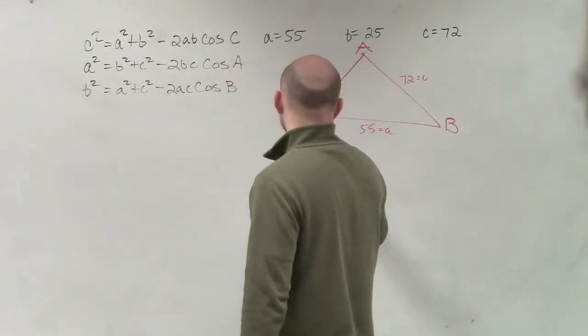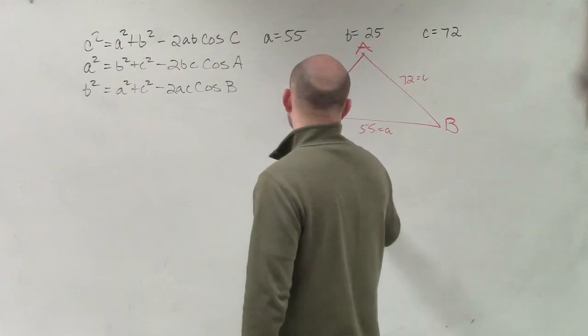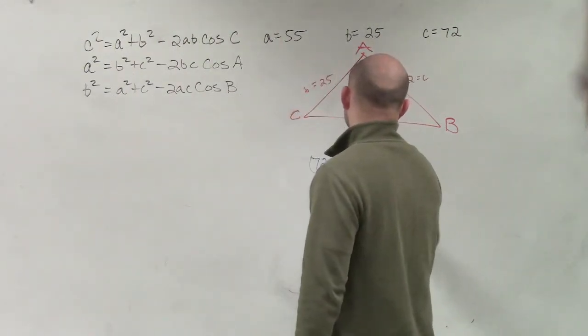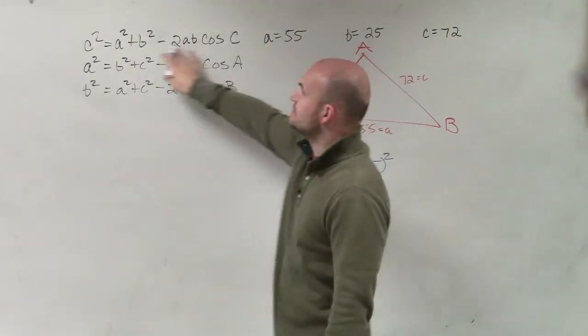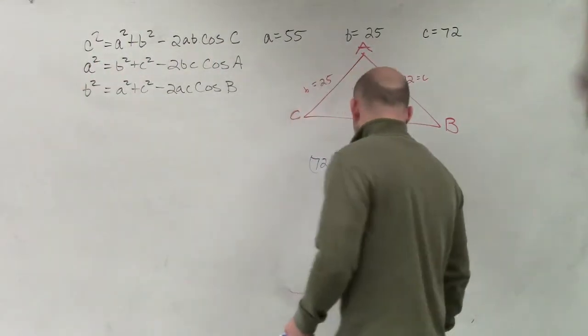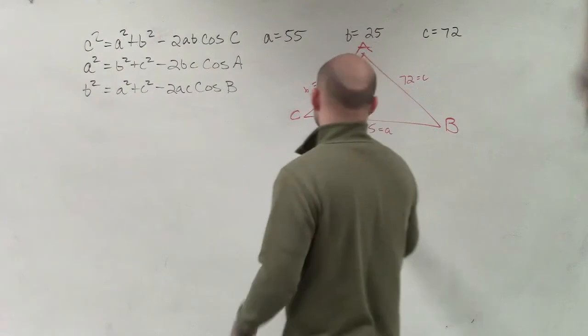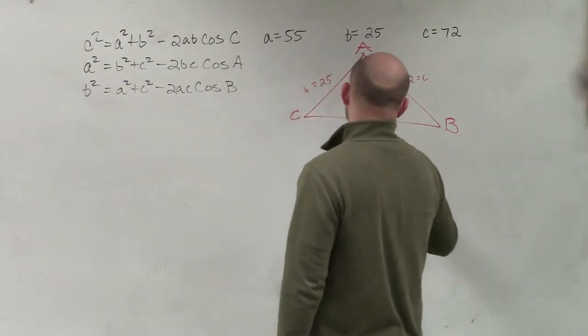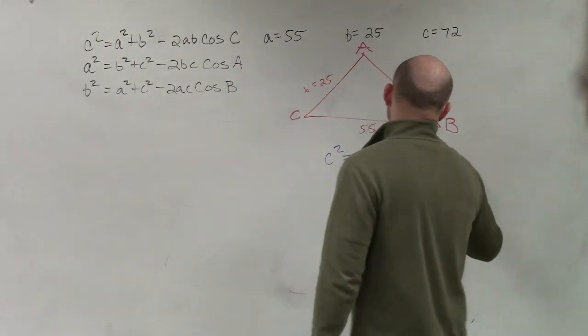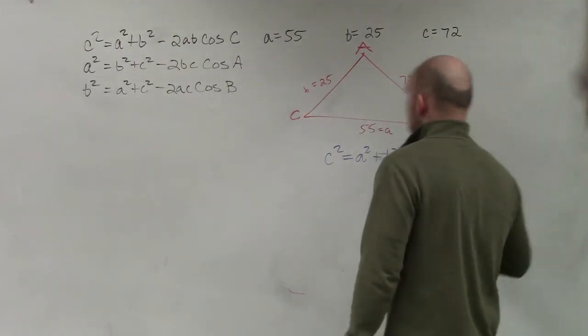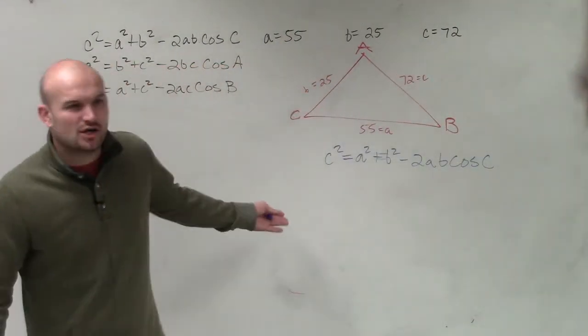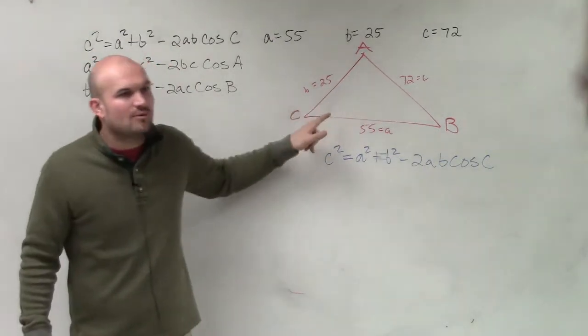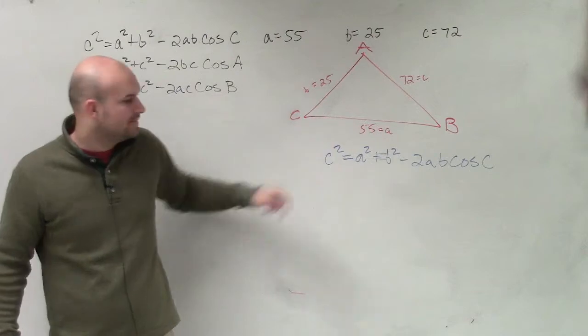Now we notice we already have the side. And you guys can see your law of cosines. Your law of cosines is solved for the angle and for the side. But I'm just going to use this general formula and then solve for my cosine of C. So therefore, I'm going to apply this formula.